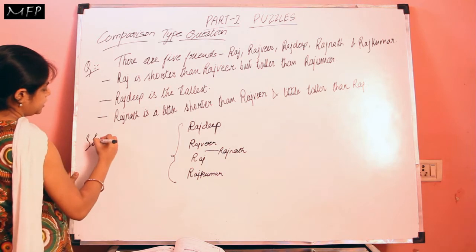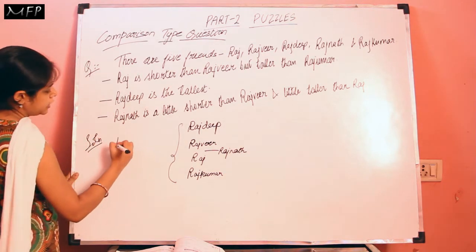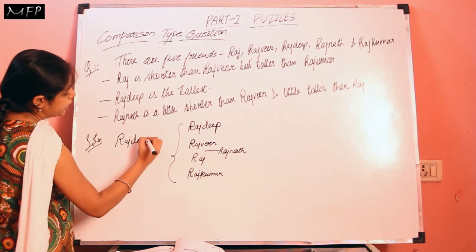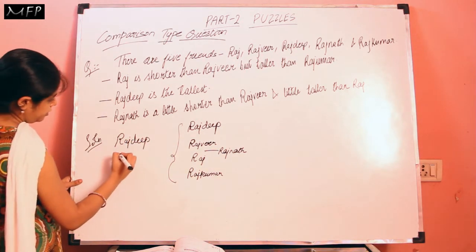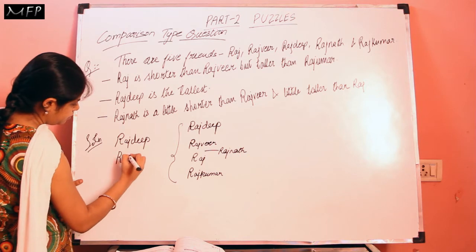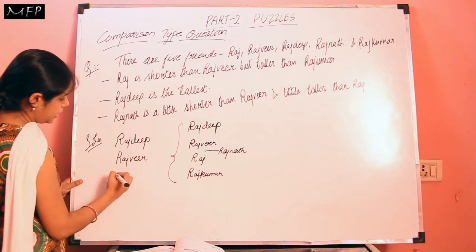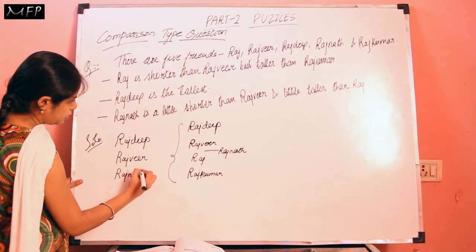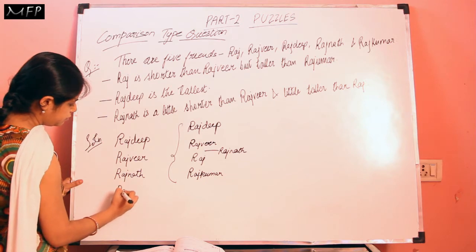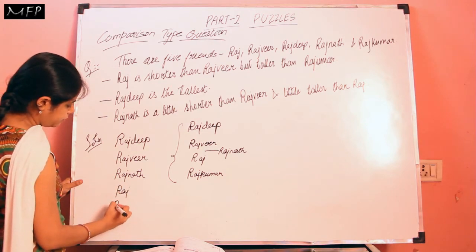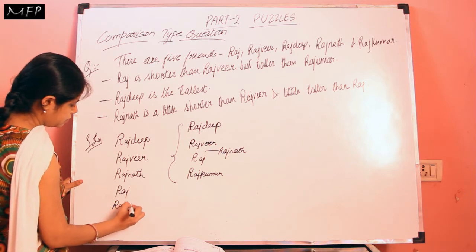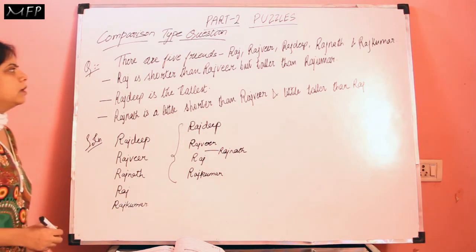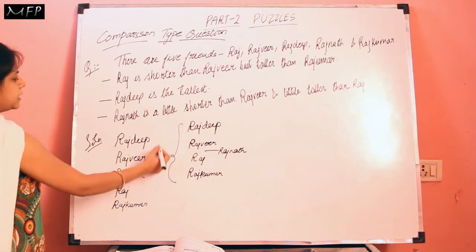The solution arranged in descending order — from more height to less height — is: Rajdeep, then Rajveer, then Rajnath, then Raj, and then Rajkumar. This is the correct arrangement.